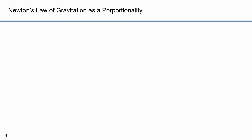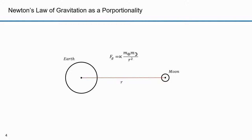Here I'll describe Newton's law of gravitation. If this is the earth and this is the moon, then r is the distance between their centers. Newton theorized that the force of gravity exerted by the earth on the moon was proportional to the product of the mass of the earth times the mass of the moon, over the distance between them r squared. We can express force as a vector. The earth is more than 81 times more massive than the moon.